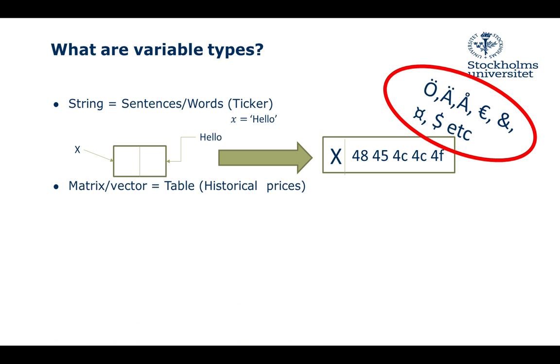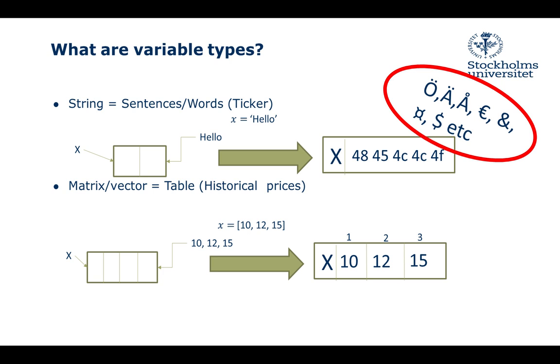Then matrices and vectors, which can be historical prices. Think of it as a table in Excel. Each time I speak about matrix and vector, imagine Microsoft Excel and how data is aligned in the spreadsheet. When you create a matrix of 10, 12, and 15, it creates a big cell called X with sub-cells where 10, 12, or 15 is written.